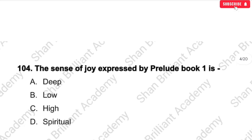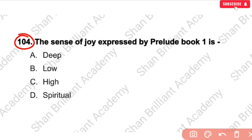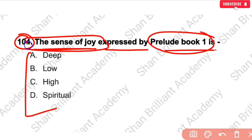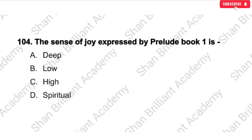MCQ No. 104: The sense of joy expressed by Prelude Book First is — deep, low, high, or spiritual? The correct answer is option number A — deep. The sense of joy in the first book of the Prelude is described as deep.